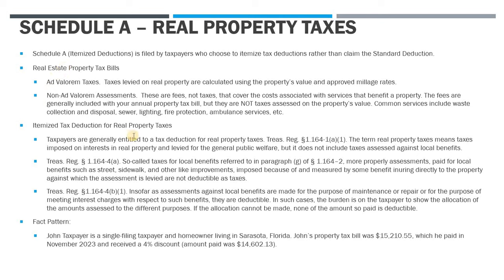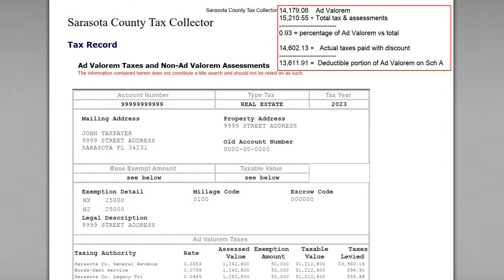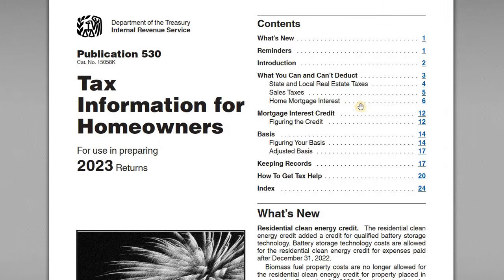Looking at the tax code in Section 164, it says that taxpayers are generally entitled to a deduction for real property taxes. Real property taxes means taxes imposed on interest in real property and levied for the general public welfare — but it does not include taxes assessed against local benefits. So the key question is: is the tax assessed on local benefits or is it an assessment for services? If so, those items are not going to be deductible as an itemized deduction.